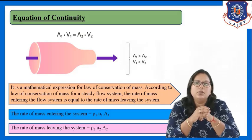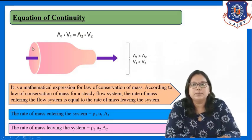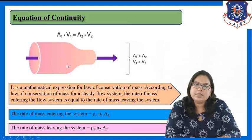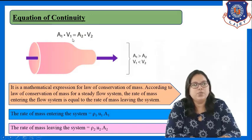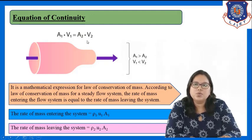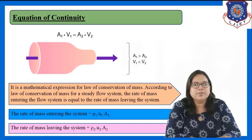Let us see how it can be represented mathematically. We take a steady state system where mass is entering and mass is leaving. At the entry point, area is A1 and velocity is V1; at the exit point, area is A2 and velocity is V2, such that A1 is greater than A2 and V1 is less than V2. This is the system assumed to derive the equation of continuity.